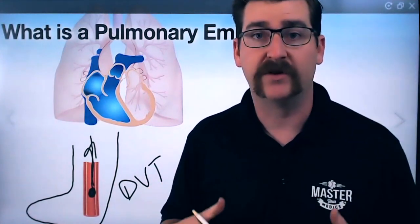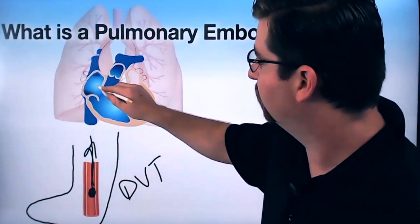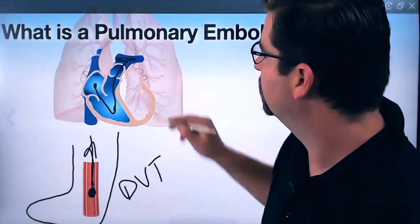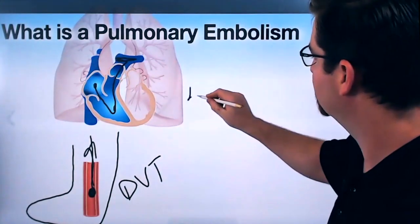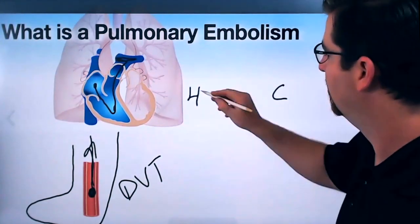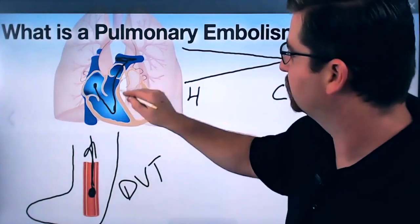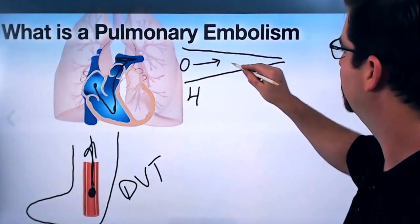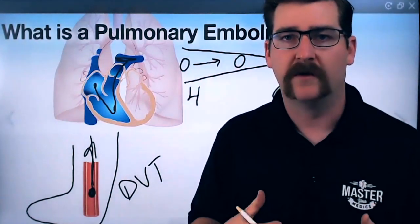They don't always break free, but they do frequently break free. So that'll shoot up here to the right side of the heart, down through the ventricle, and then up into the pulmonary arteries. Now those pulmonary arteries go from big down to small, from the heart side to the capillary side where the alveoli themselves are. So that clot, as it's traveling through there, is going to continue through and eventually get wedged, blocking and occluding the vessels.